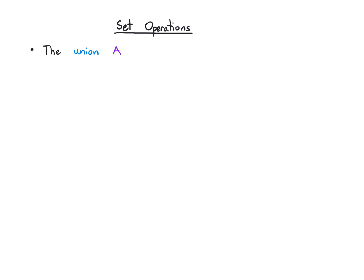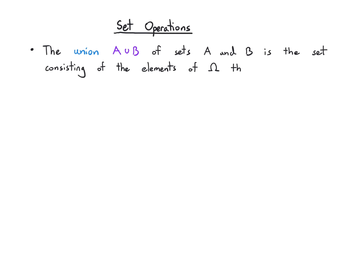Let's continue and think about some set operations. The first is the union, written as A with this U symbol B. The union of sets A and B is the set that consists of elements of the universal set that happen to belong to either A or B or both — they just have to belong to one of those sets to be part of the union.